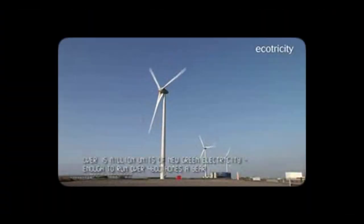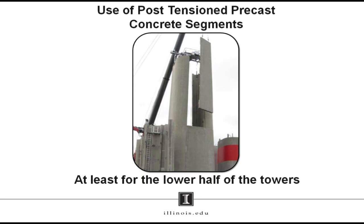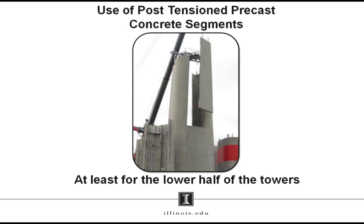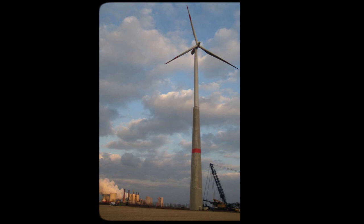To be able to go to these taller heights, we have to move away from using solely steel constructions to constructions that involve the use of precast segments at the lower part of wind towers and steel construction for the higher part of wind towers.